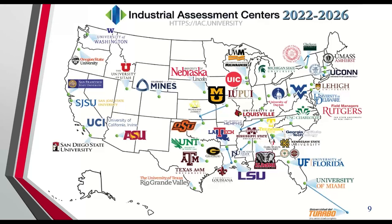Those 37 sites are located across the nation, so perhaps you have a sister facility in another state. If you go to the IAC.university website, you can put in the zip code of whatever facility you're interested in and it will provide the five nearest IACs. But if you're in Ohio, it's pretty easy — your IAC is the University of Dayton. We cover all of Ohio, parts of Indiana, parts of Kentucky, and we have gone up to Detroit before. So if you're within that area, you're probably going to be assigned to us anyway.